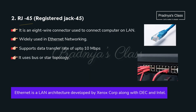The second network device is RJ45 — Registered Jack 45. Look at the diagram. It is an 8-wire connector, majorly used in ethernet networking. It provides 10 Mbps of transfer rate.